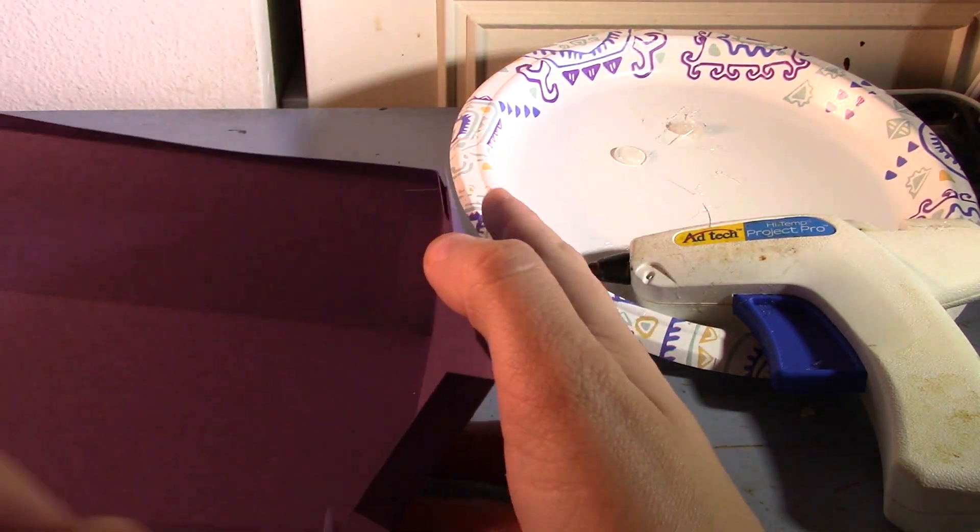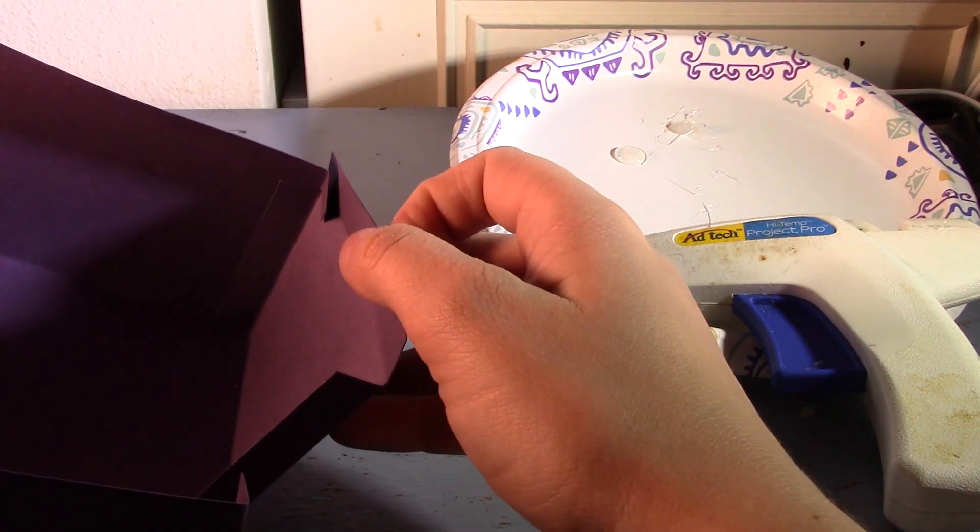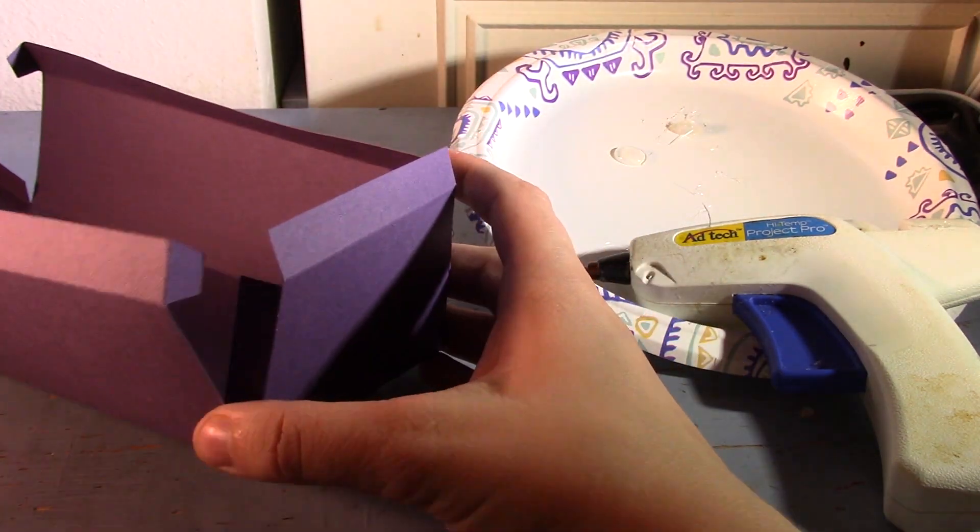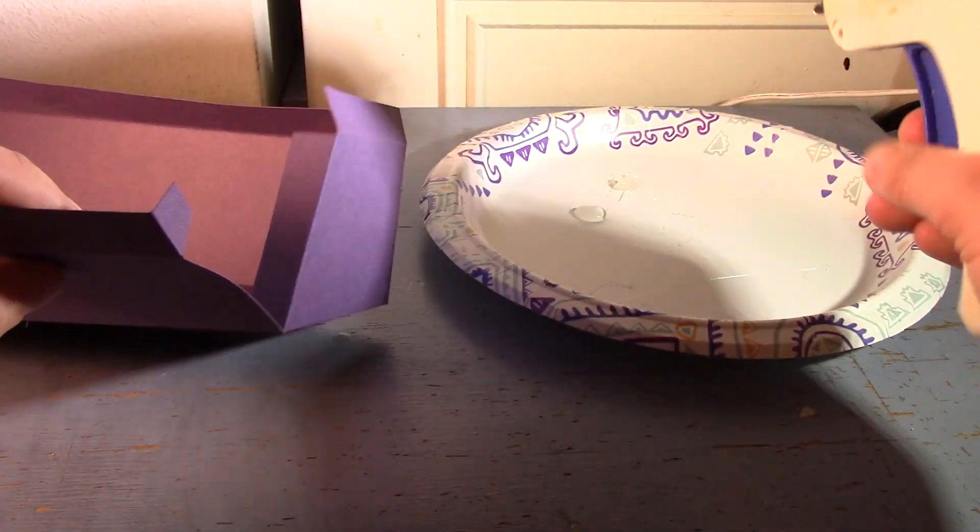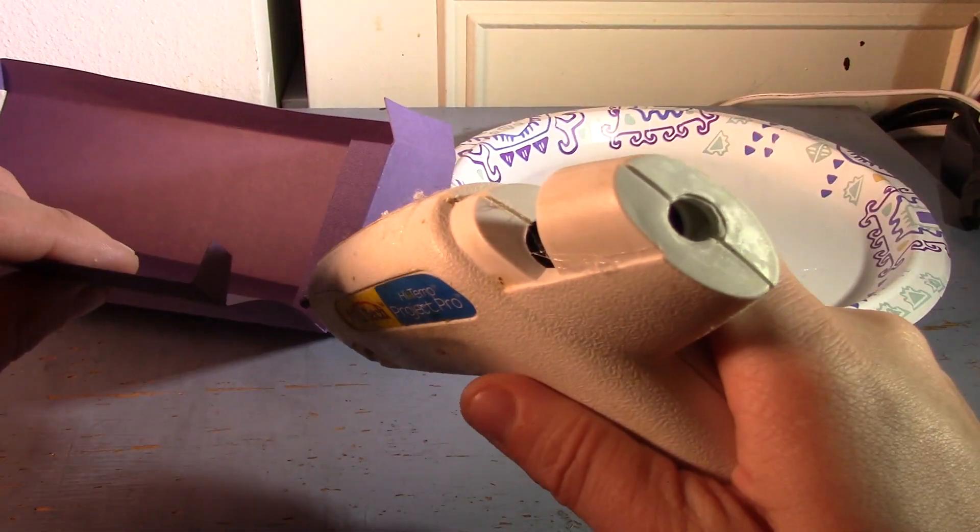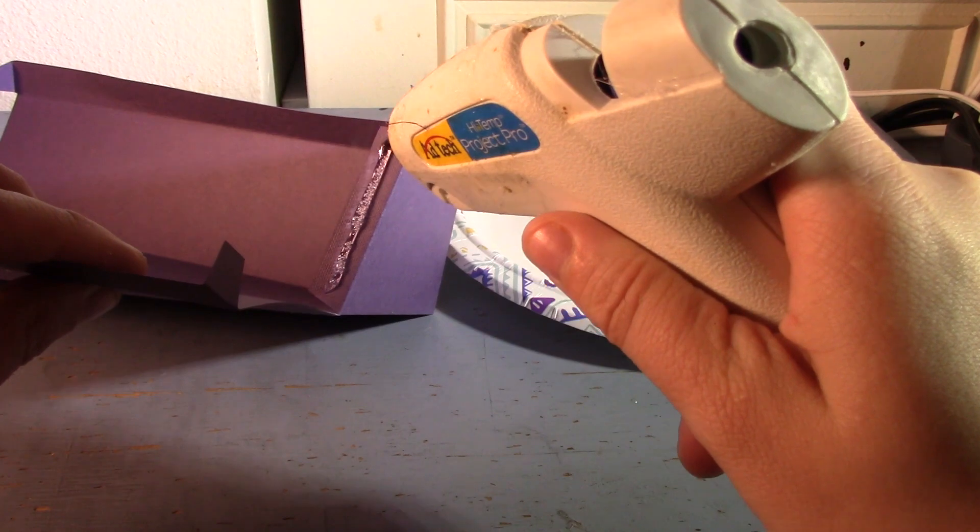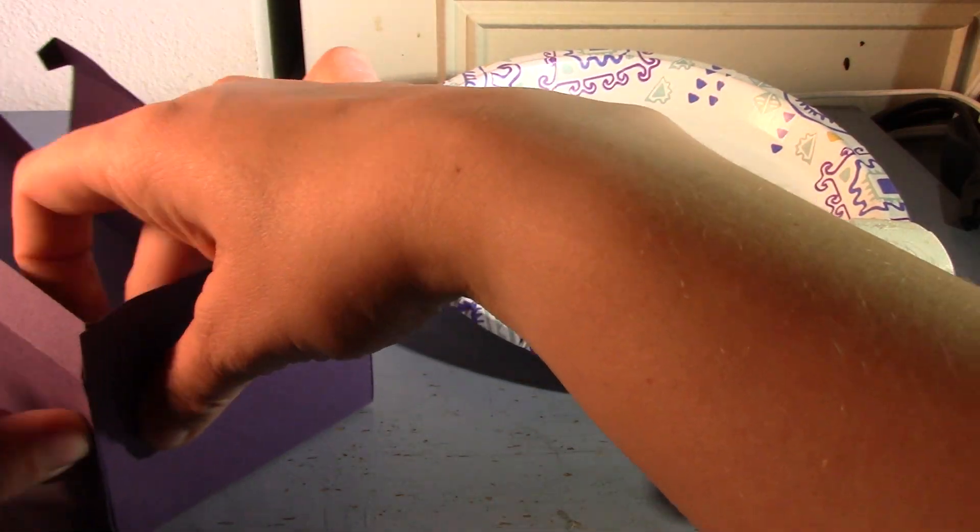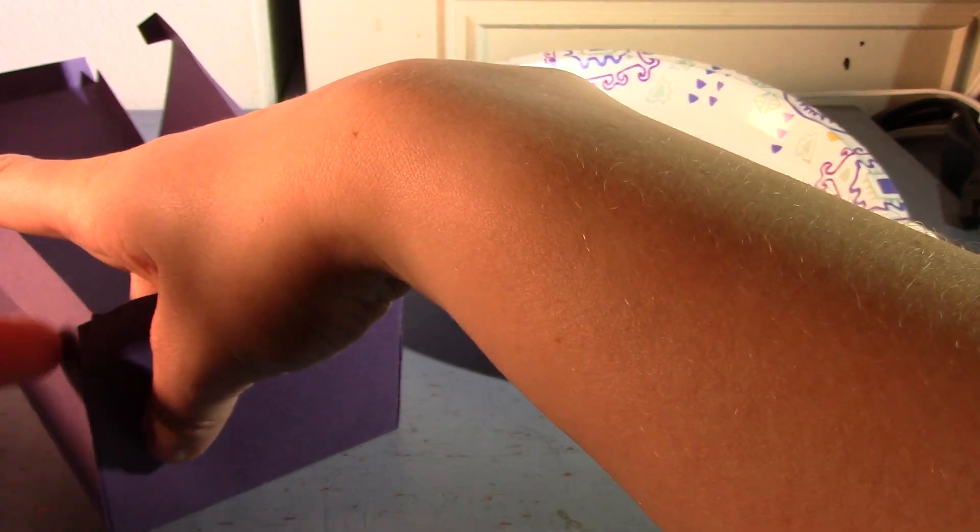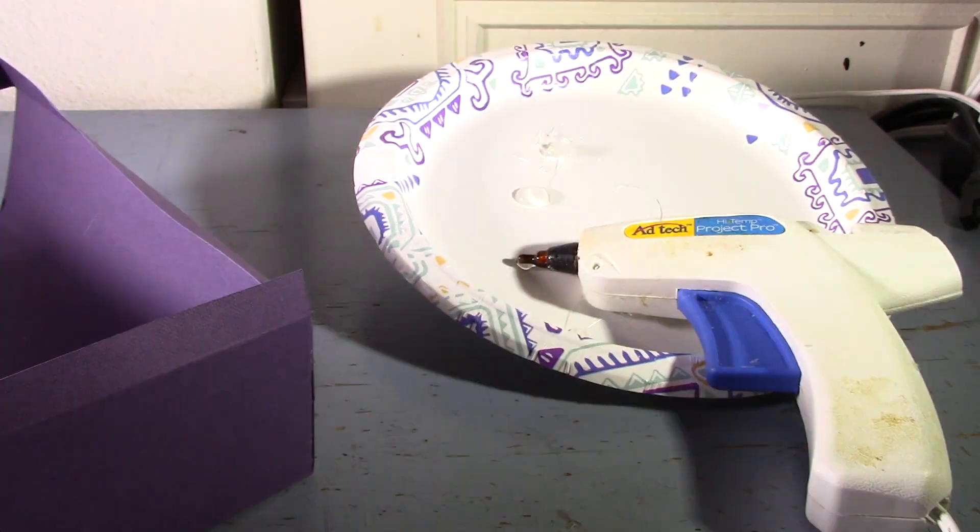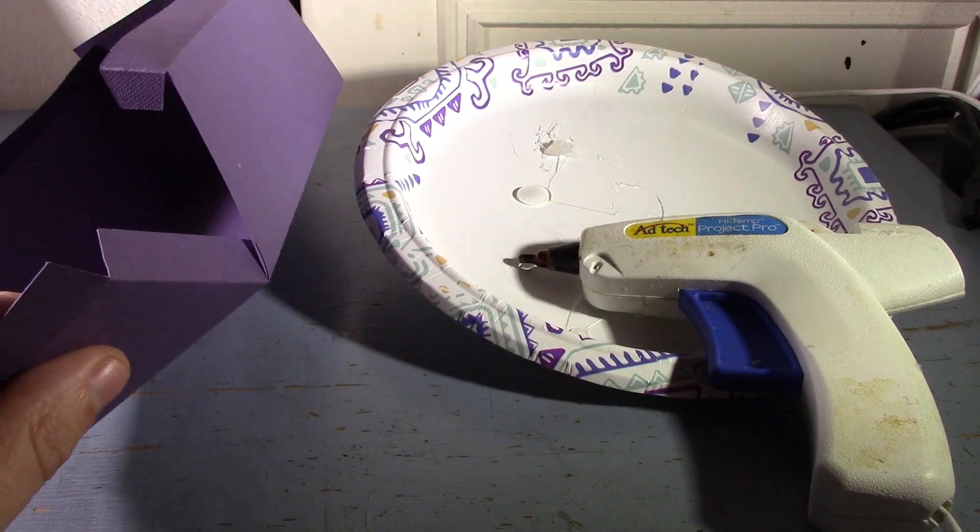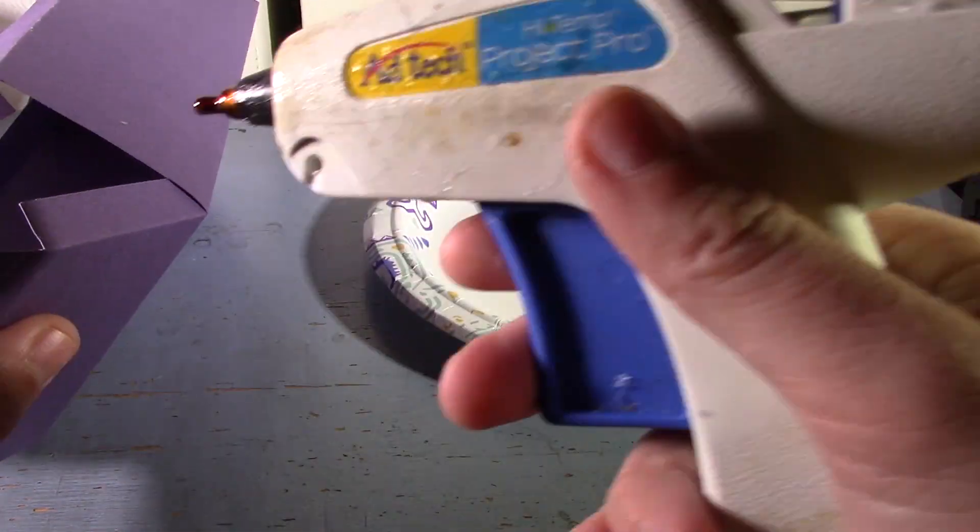And then just kind of push down there. This little flap that you see right there, we will glue that down a little later. So you're going to do the same thing on this side. Just glue it down and make sure the edges are to each other. And then we're going to do the same thing on the other side as well. Just glue both sides down.